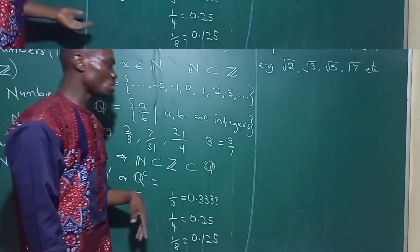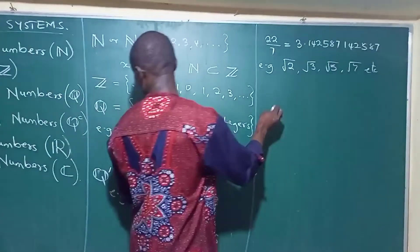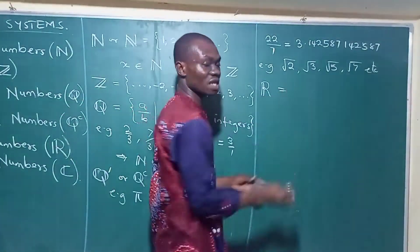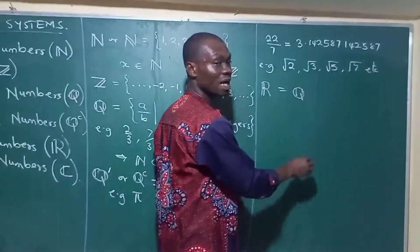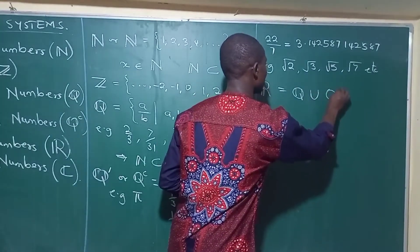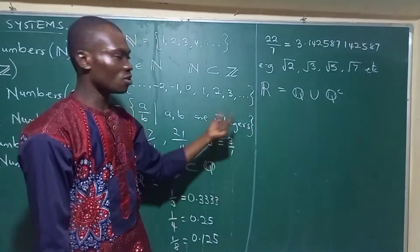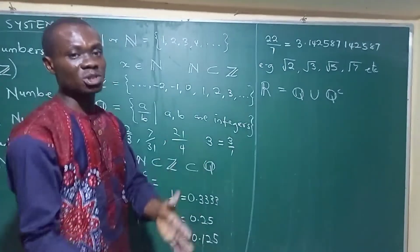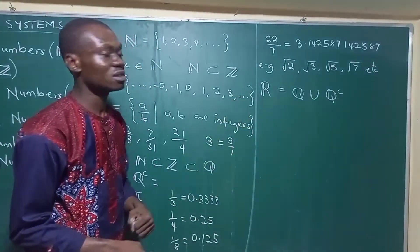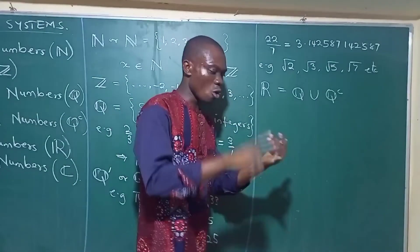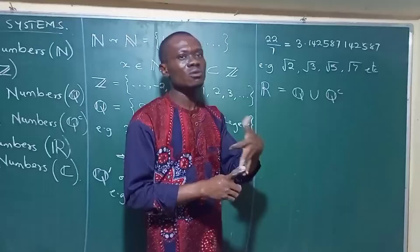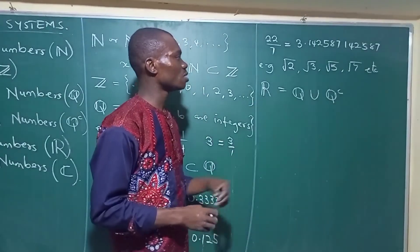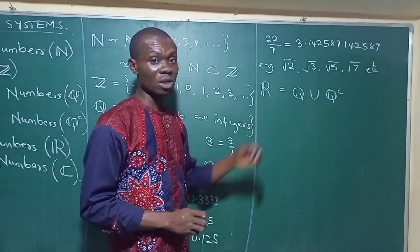The next type of numbers is the real numbers, which we represent with the symbol R. We say that this is just a combination of all the rational numbers together with the irrational numbers. So when we combine rational numbers with irrational numbers, we get the set of real numbers. That means the set of real numbers includes whole numbers whether positive or negative, it includes zero, it includes fractions, and it includes all other numbers that cannot be represented as fractions. That is what we call our real numbers.